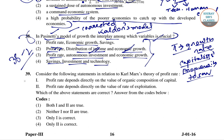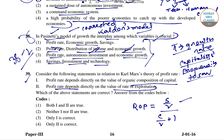Now question number 39: consider the following statements in relation to Karl Marx's theory of profit rate. Statement 1 says the profit rate depends directly on the organic composition of capital. Statement 2 says the profit rate depends directly on the rate of exploitation. According to Karl Marx, the rate of profit equals S/V divided by (C/V + 1), where C is constant capital, S/V is the rate of exploitation and C/V is the organic composition of capital.